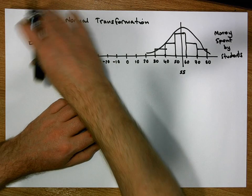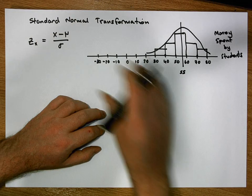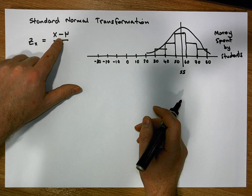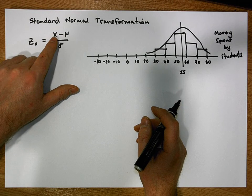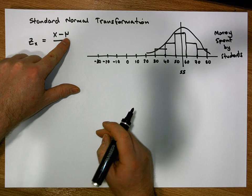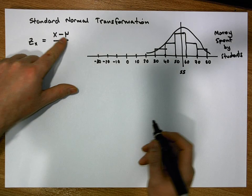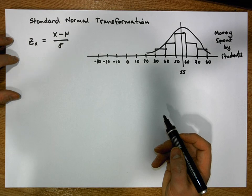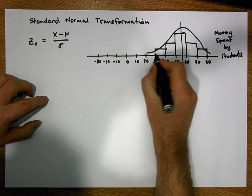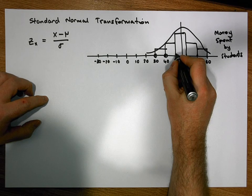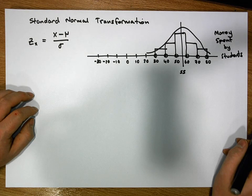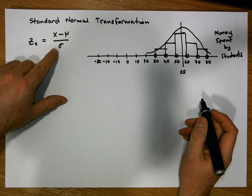Now let's look at the effect of this transformation on this distribution. The first thing we'll consider is the effect of x minus μ — any observation from this population minus the population mean. For simplicity, we'll consider the observations 30, 40, 50, 60, 70, and 80.